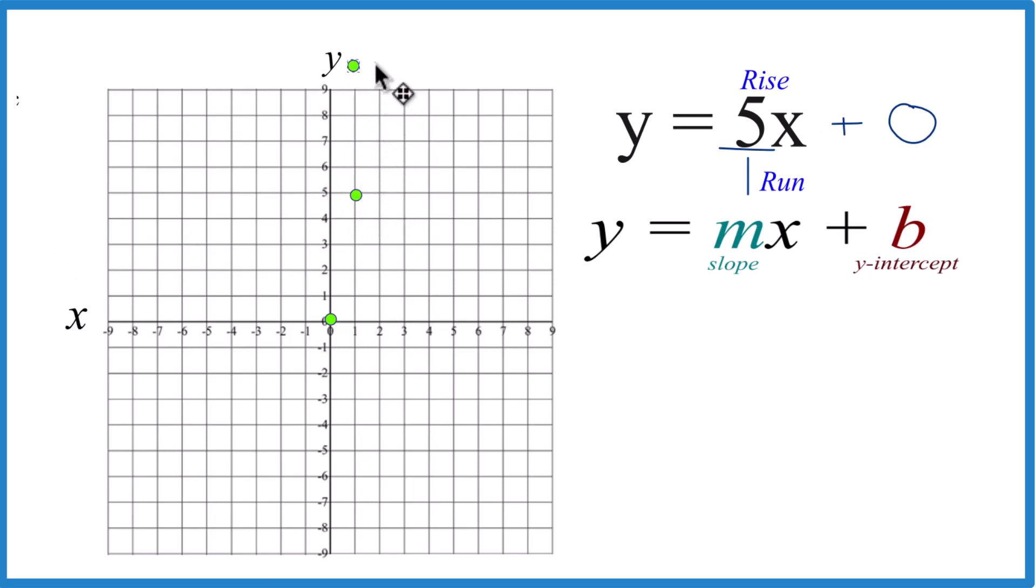Rise 1, 2, 3, 4, 5, and over 1. But that's off the graph. So let's go down here and do the opposite direction. Go down 1, 2, 3, 4, 5, and to the left one. Now we have our three points.